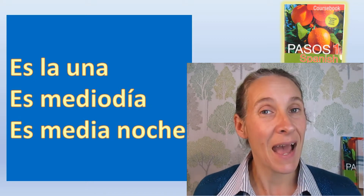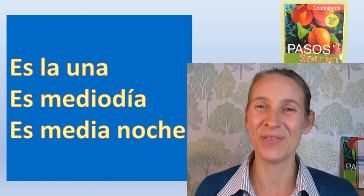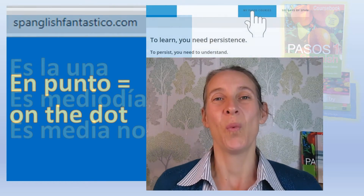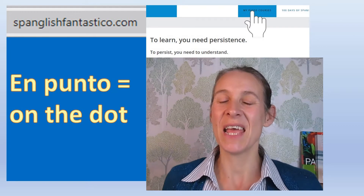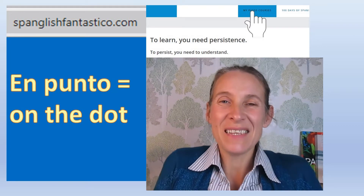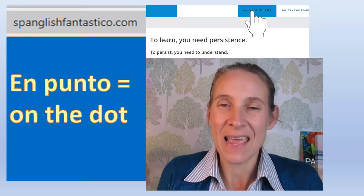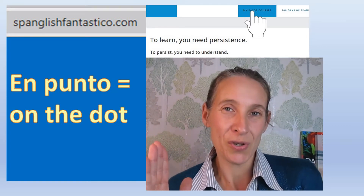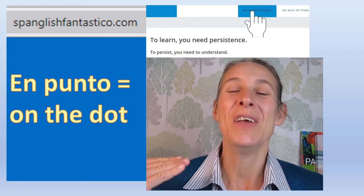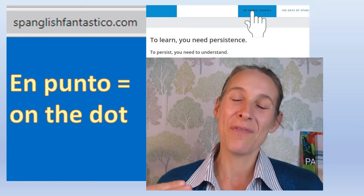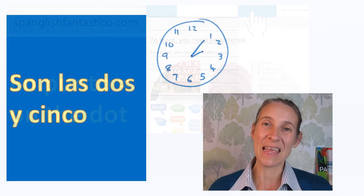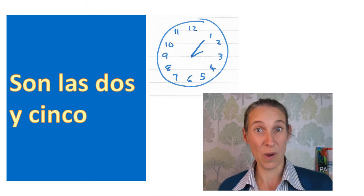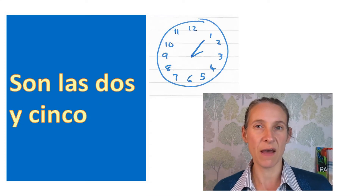What happens when it's not precisamente en punto — on the dot? To go around the clock, we say y instead of where we would say 'past.' We would say 'five past two,' but in español it's the other way around.